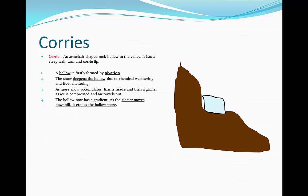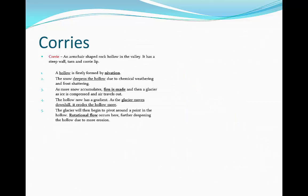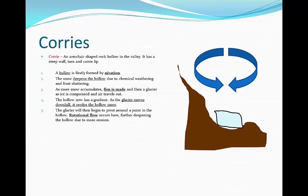The hollow now has a slight gradient so the glacier can move down it. As the glacier moves down, it erodes the gradient and the valley, creating a slight incline. The glacier will begin to pivot around a point in the hollow. Rotational flow then occurs here which further deepens the hollow due to more erosion.